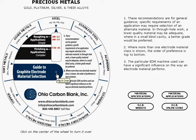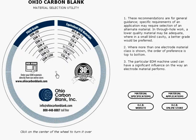Click on the center of the wheel to flip it over. You should see the Ohio Carbon Blank Poco Graphite Conversion Chart. Poco grades are displayed on the left, while equivalent OCB grades are displayed on the right.